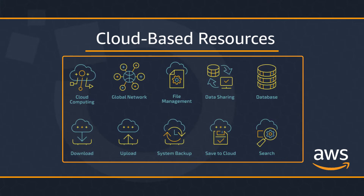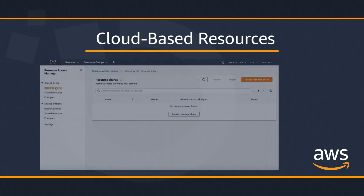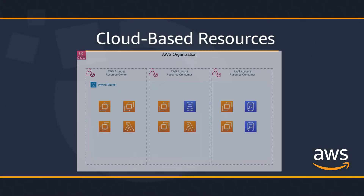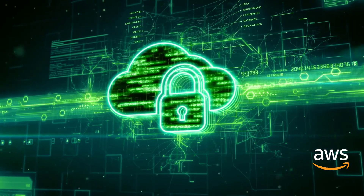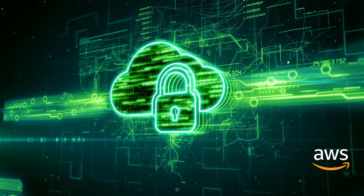For example, resources include databases, file storage locations, the code that a service runs, and more. When you create a resource, it exists in the cloud, but you can use it and manage its content. You also specify the permissions that individuals or groups have to access or use the resource. For example, you might allow anyone in the public to read from your database, but not write or modify it.